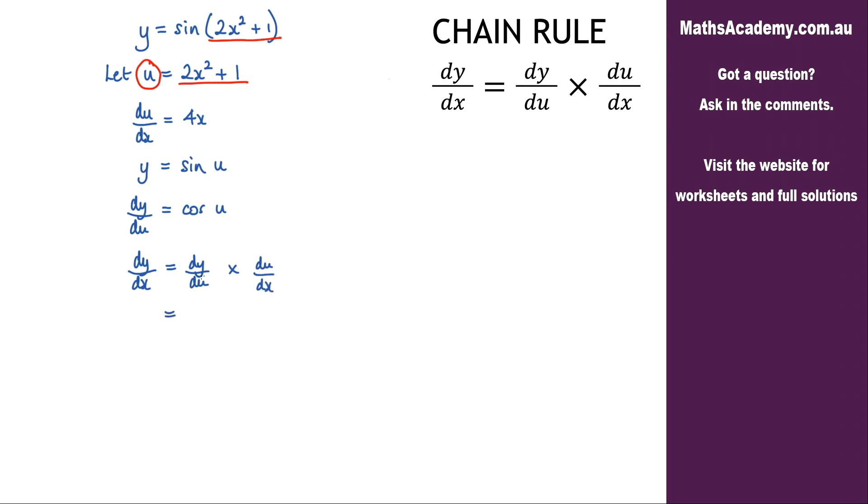Now I know that dy by du is cosine of u. So cosine of u multiplied by du by dx which is 4x.